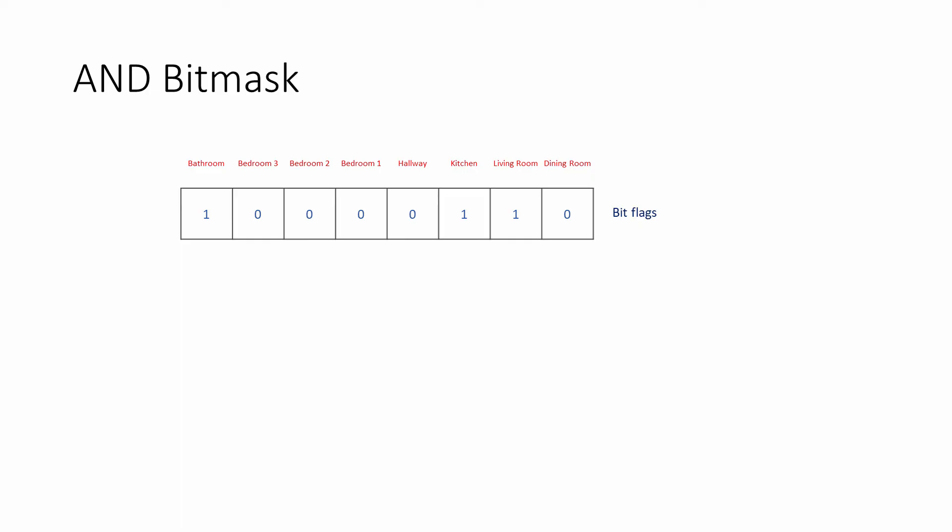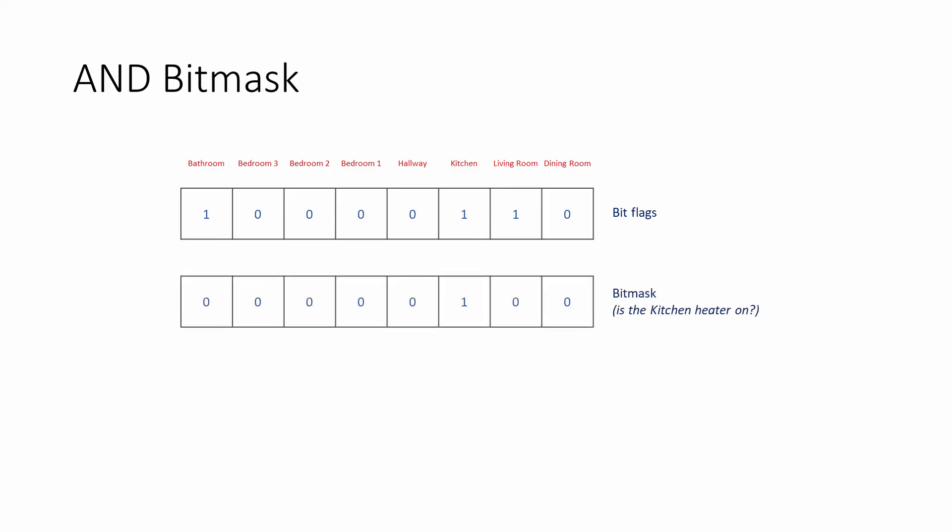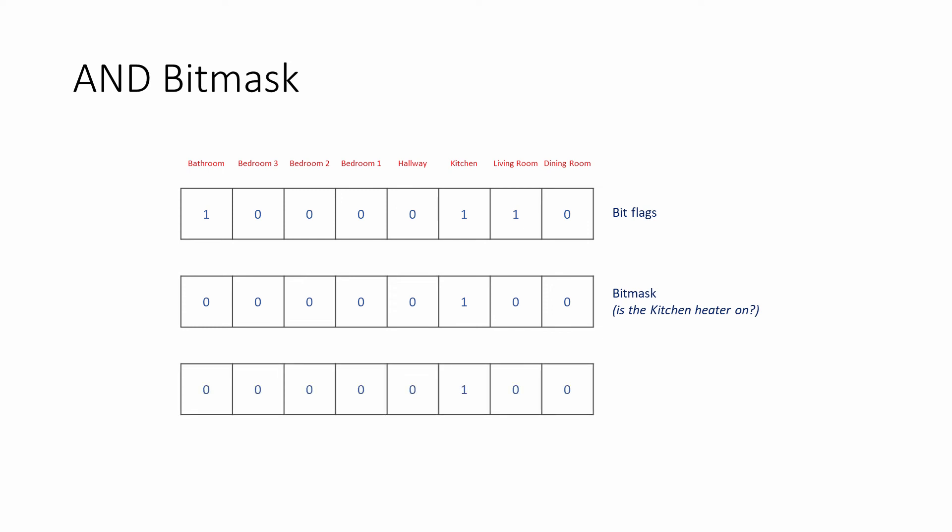This system needs some way to test individual bit flags to check where specific heaters are on. To check whether the heater is on in the kitchen, for example, we can apply an appropriate bit mask. This bit mask is a byte containing a 1 in the position that represents the state of the kitchen heater. When the byte containing the bit flags is ANDed with the bit mask byte, the resulting byte will contain a 1 in the kitchen position if the kitchen heater is on, meaning the resulting byte will have a non-zero value. If the kitchen heater is off, the kitchen position in the resulting byte will contain a 0, and hence the resulting byte will have a value of 0.